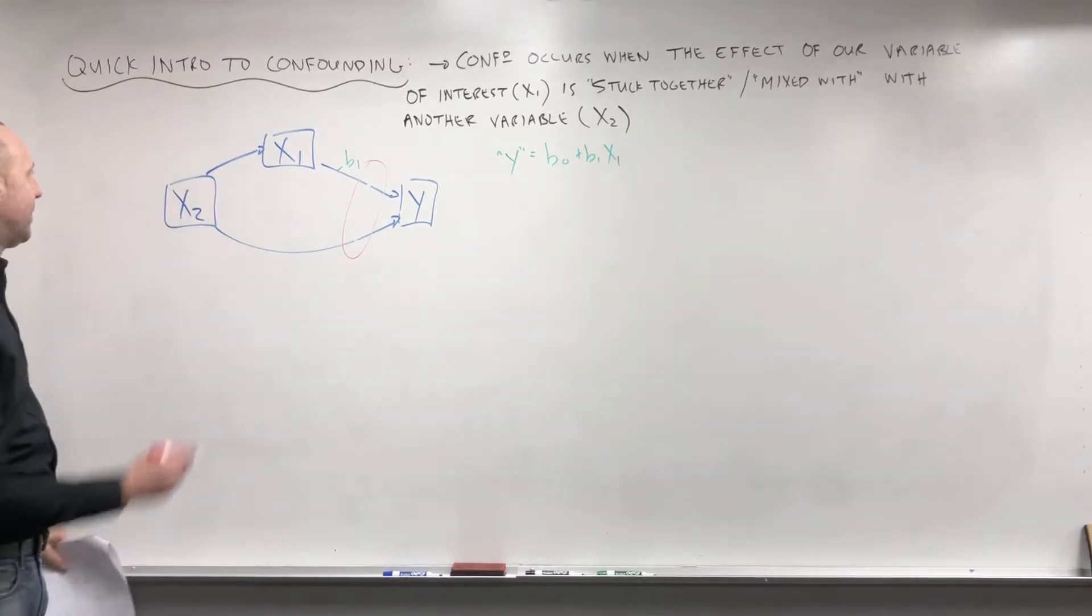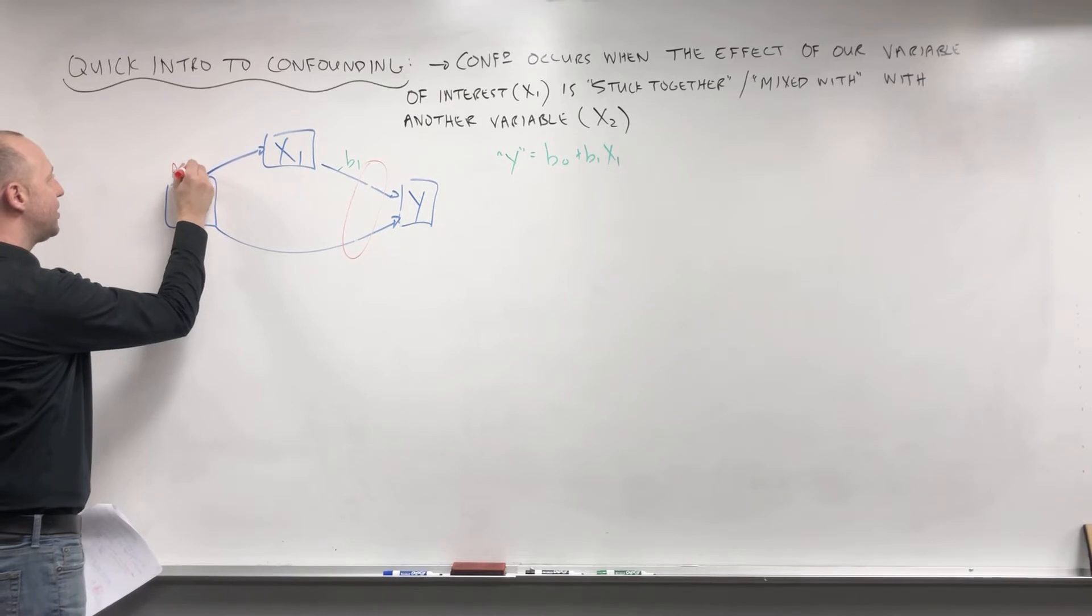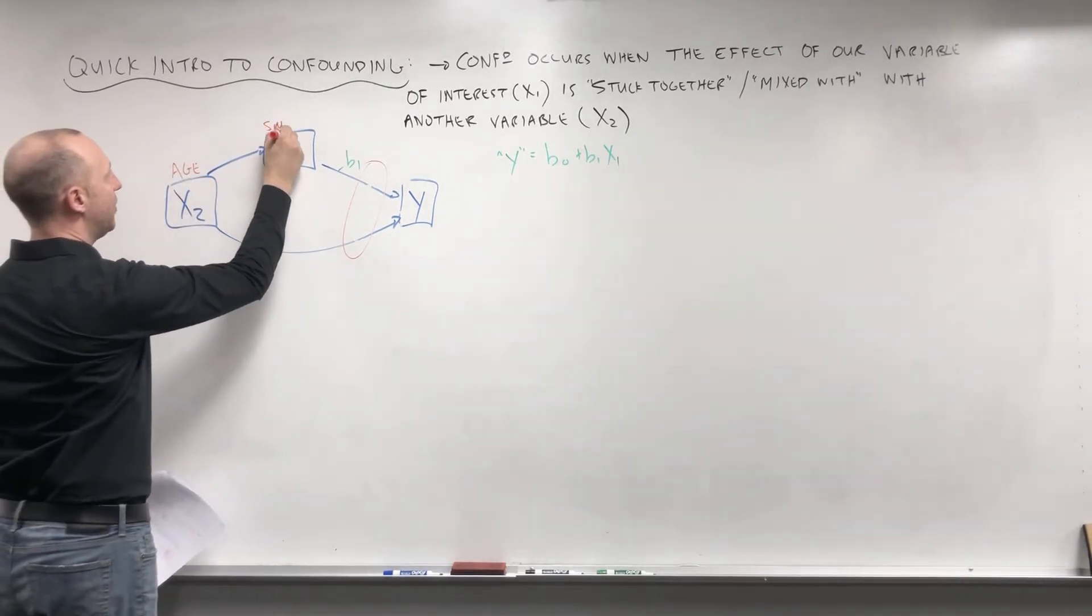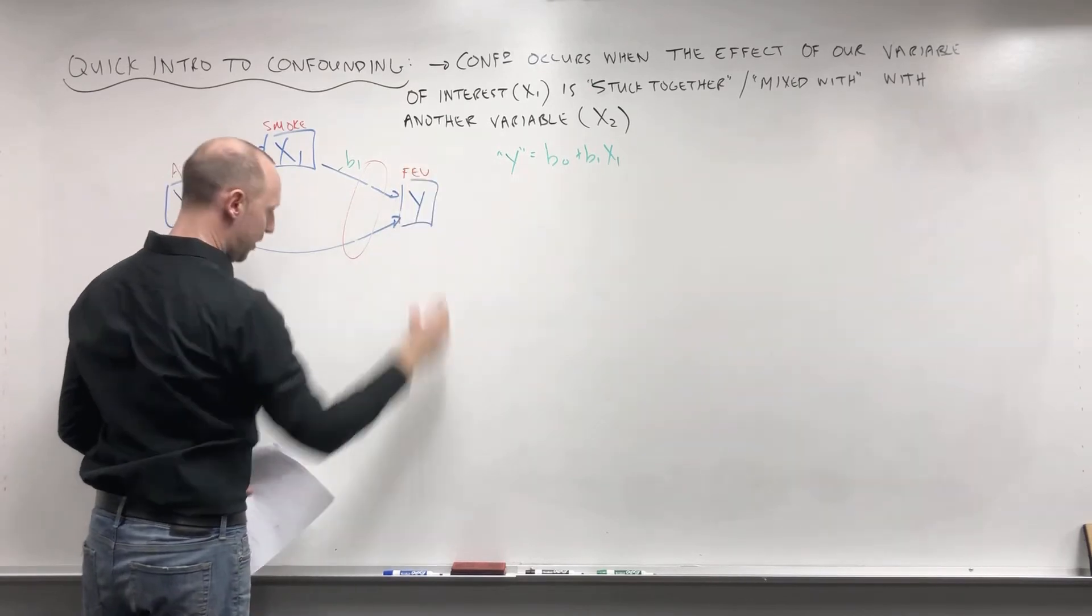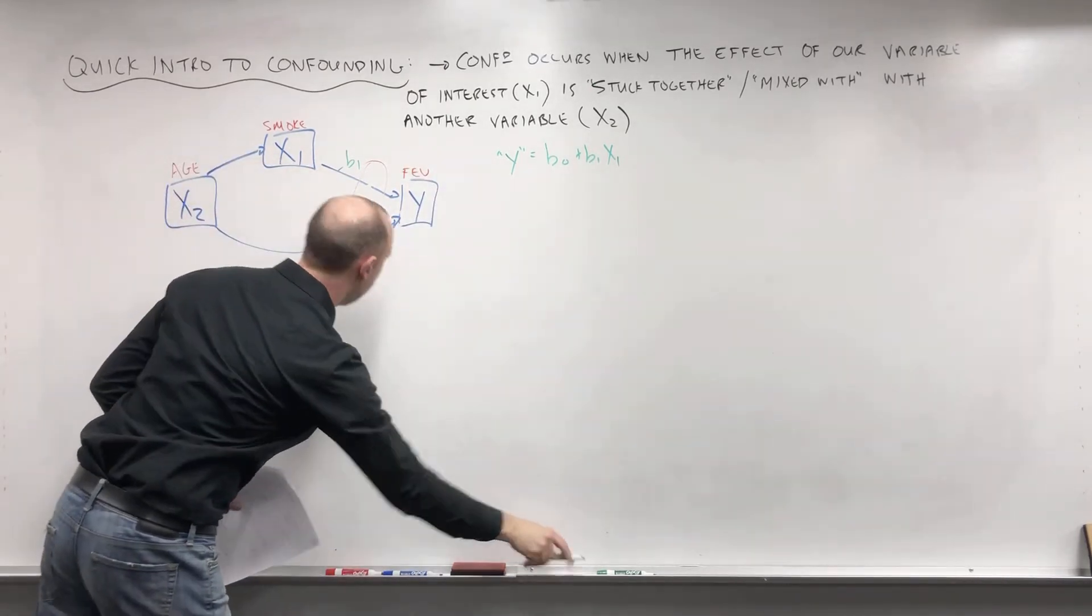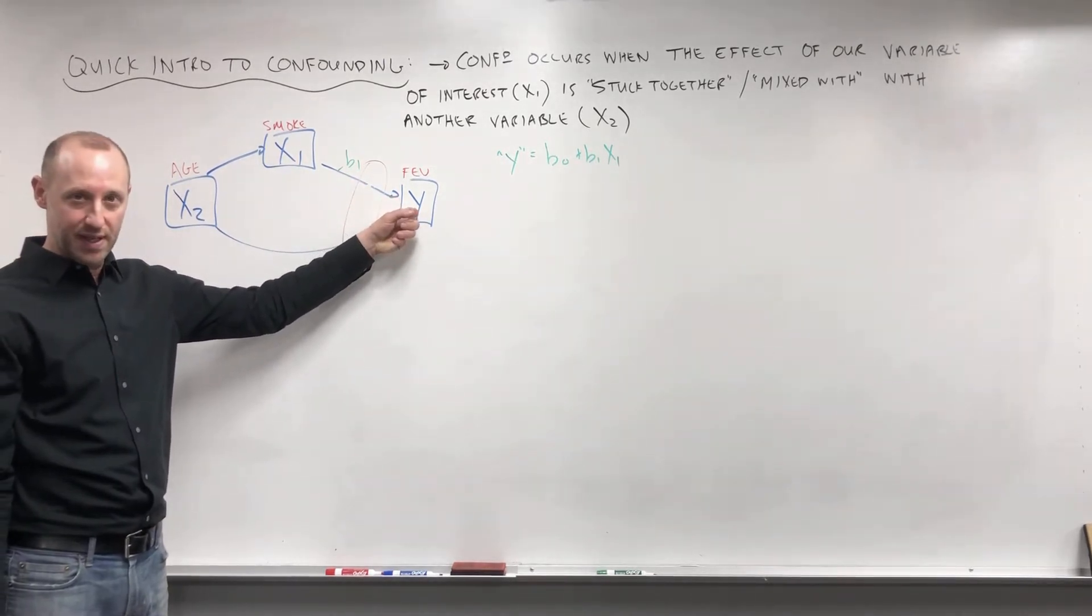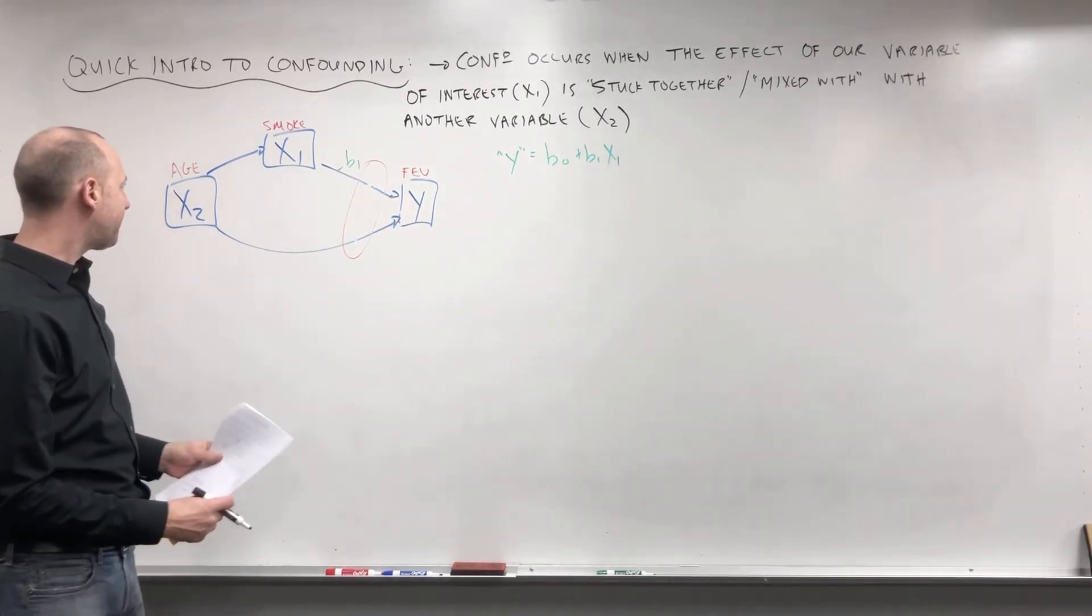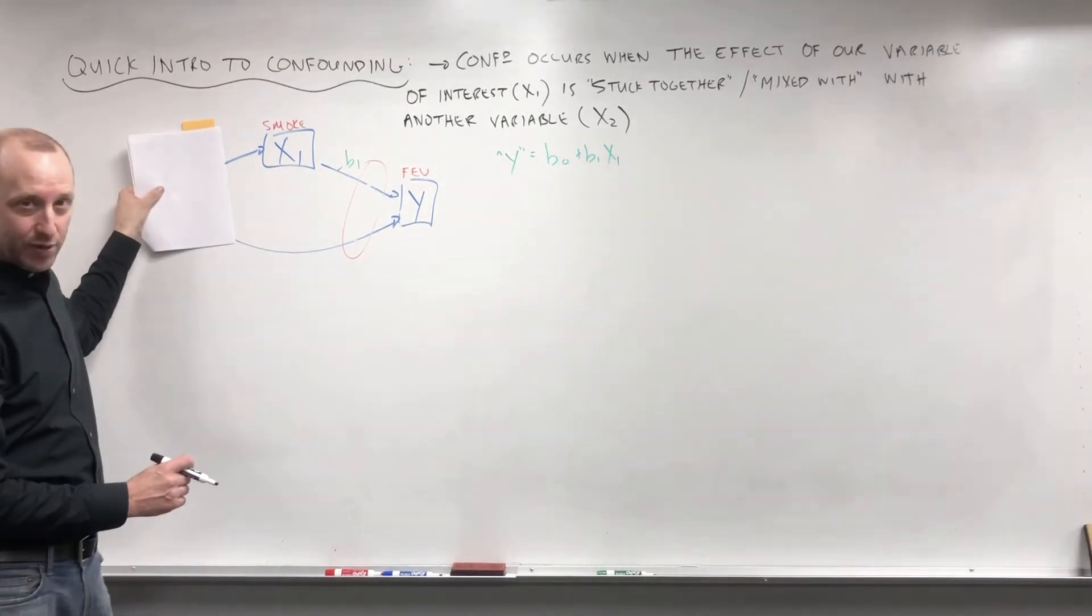So let's just think of this example. In our data set we have age, we have smoking, and we have the FEV or the lung capacity. And our goal here is to try and estimate what effect does smoking have on the lung capacity of these kids. Now let's suppose that age is not included in the model.